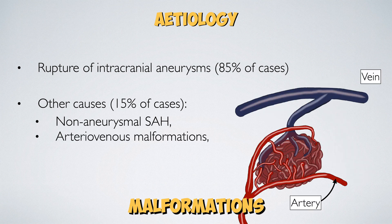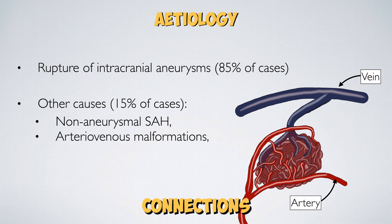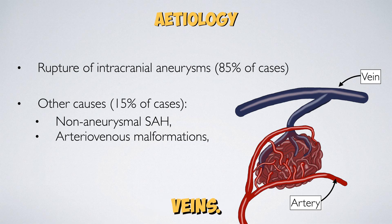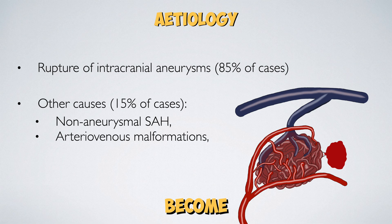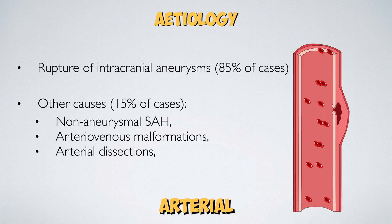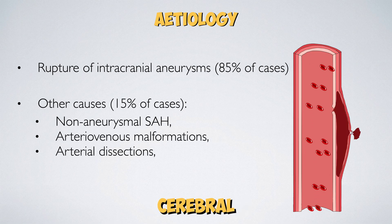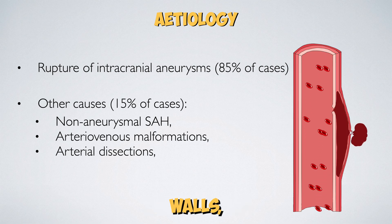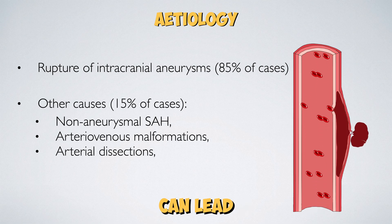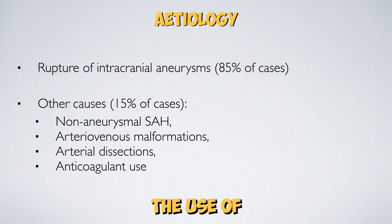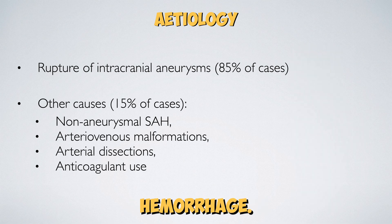Arteriovenous malformations are abnormal connections between cerebral arteries and veins, which can become unstable and haemorrhage. Arterial dissections are produced by weaknesses in the cerebral artery walls and these can lead to rupture. Finally, the use of anticoagulants may also lead to subarachnoid haemorrhage.